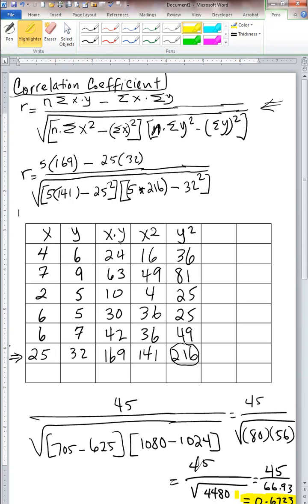However, the strength of the relationship is only moderate because we have 0.67 as the numerical value for this relationship.